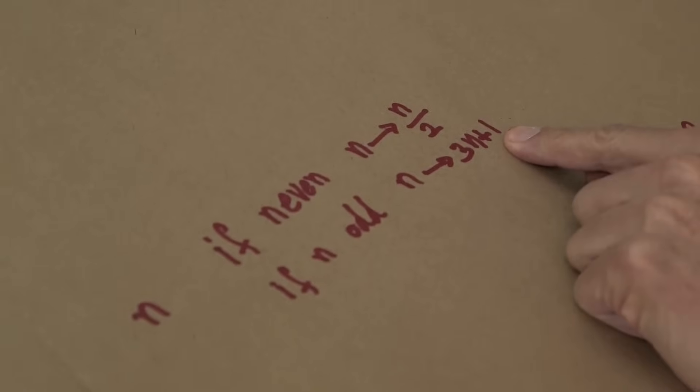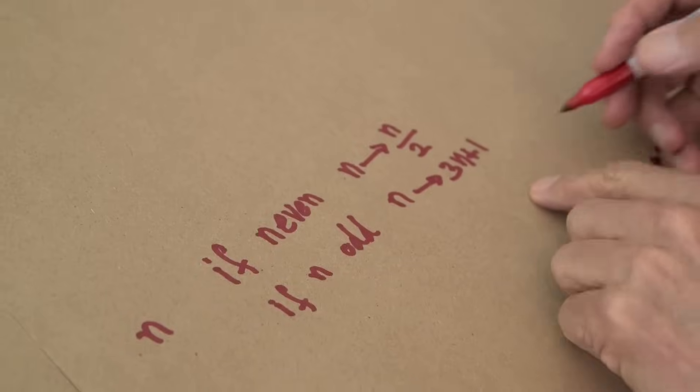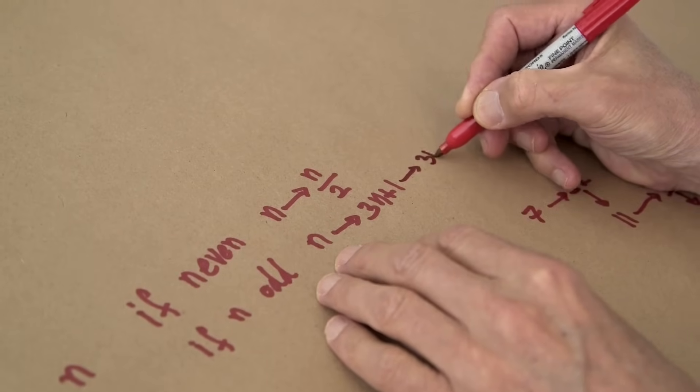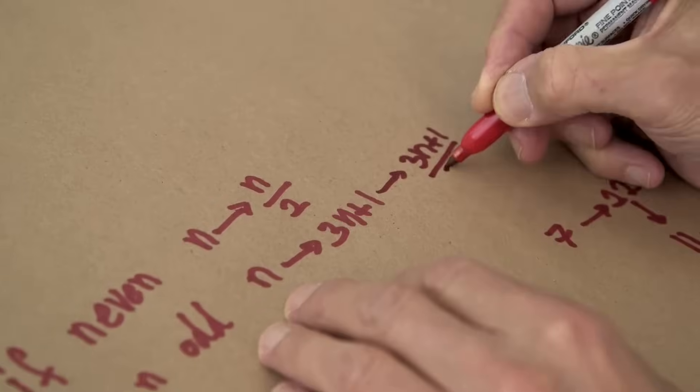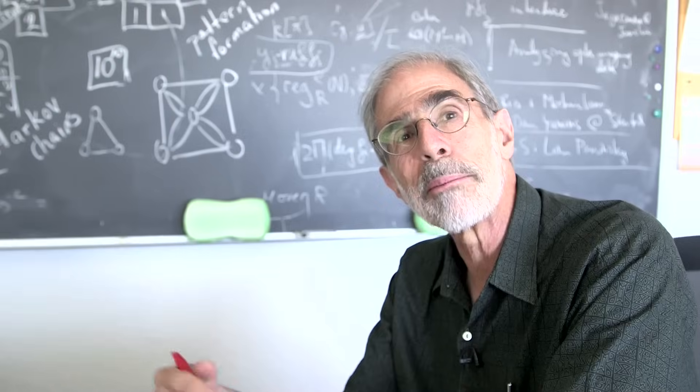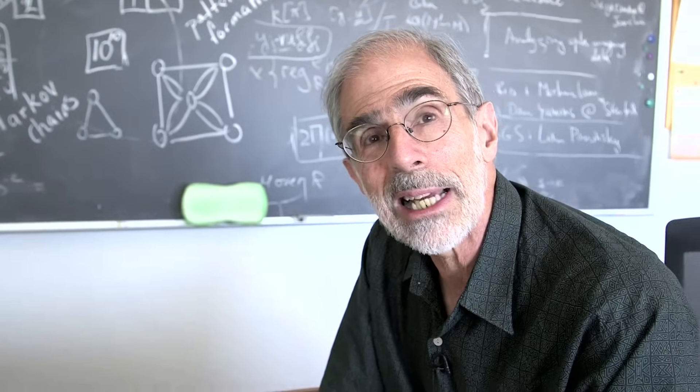Every time I take an odd number and multiply by 3n and add 1, I get an even number. So why not take two steps at once to 3n plus 1 over 2? Combine those two steps when I get an odd number. That speeds things up a bit. And there are other tricks like that.